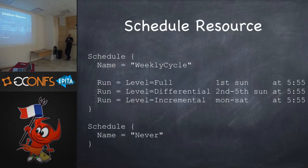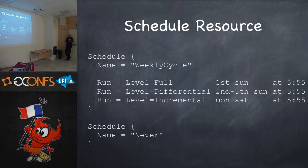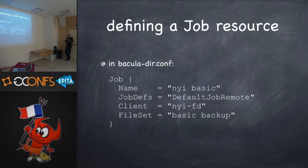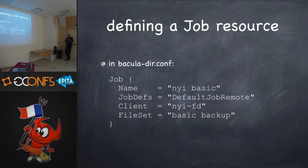Schedules are very flexible. The one I use says that on the first Sunday of every month you run a full, every other Sunday is a differential, and all other days are incremental. I go one step further — all my full backups go into the full pool, all differential backups into the differential pool. A job is defined with a name, job defs (which is like an include file), and the file set you're going to back up. You can use the same file set for multiple clients.